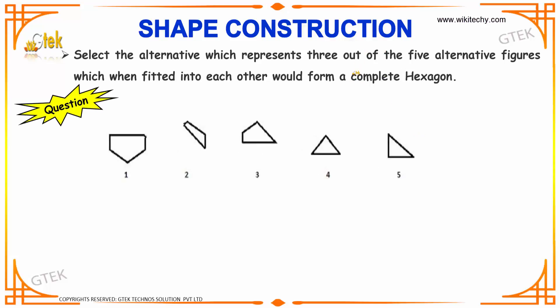Proceeding to our next interesting example, we have to construct a complete hexagon from the given alternatives: 1, 2, 3, 4, and 5.